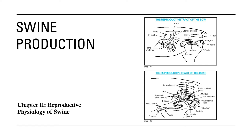Good day to everyone. I will be discussing Chapter 2 on reproductive physiology of swine. Last discussion, I talked about the breeds of swine, the industry, as well as the different mating systems. Now we're going to talk about the reproductive physiology, specifically on the reproductive organs — the reproductive organs of the sow and the boar. Next discussion, we'll talk about the reproductive phenomenon. For now, it's all about the organs.